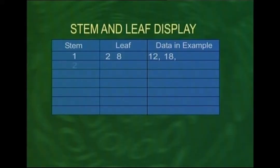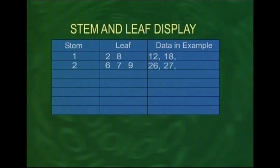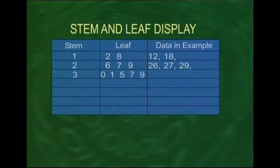Similarly, the second stem is 2, with leaves 6, 7, and 9, meaning three patients had ages 26, 27, and 29. These ages clearly fall in the class 20 to 29. In this way, it is quite simple to interpret the stem and leaf display and to convert it into a frequency distribution.